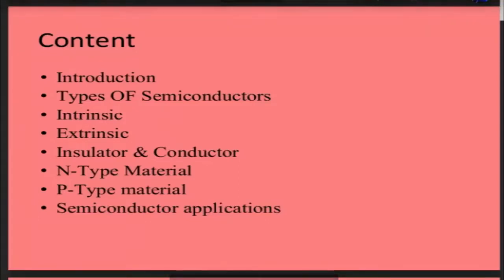Today we are going to see semiconductor materials. Semiconductor materials are basically used in electronic devices and different types of sensors. Sensors are those electronic devices or instruments which give you an idea about a physical quantity — say for example a speedometer or a temperature measuring device. The temperature value or speed value is converted into an electric signal — this is how your sensor works.